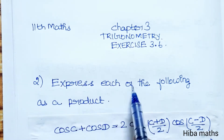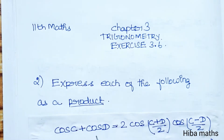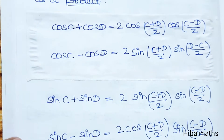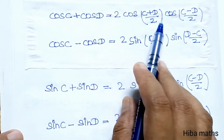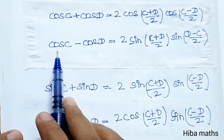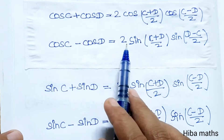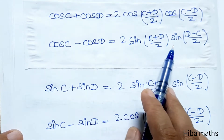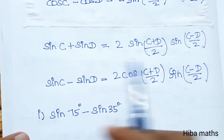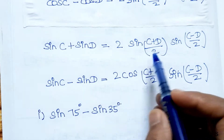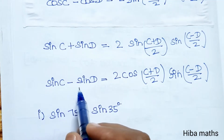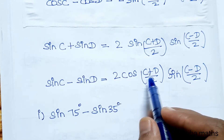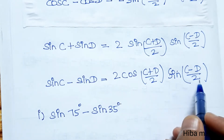Express each of the following as a product. If you add the sum or difference, you can find the product. In this question, we will use 4 formulas. Cos C plus cos D equals 2 cos((C+D)/2) cos((C-D)/2). Cos C minus cos D equals 2 sin((C+D)/2) sin((D-C)/2). Sin C plus sin D equals 2 sin((C+D)/2) cos((C-D)/2). Sin C minus sin D equals 2 cos((C+D)/2) sin((C-D)/2).